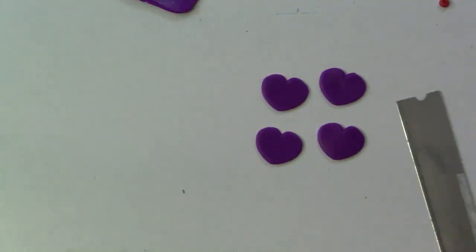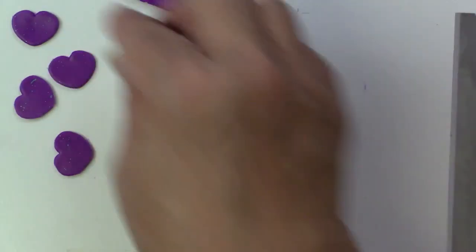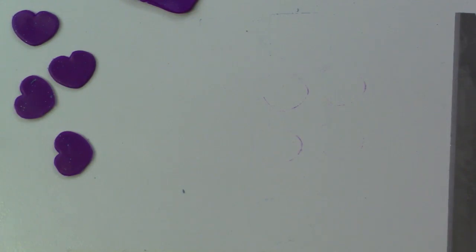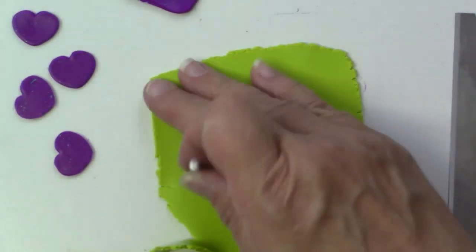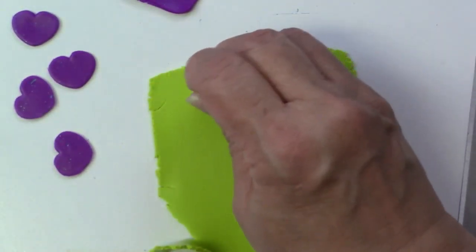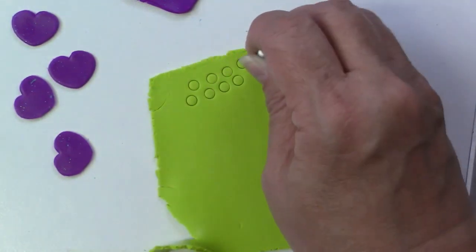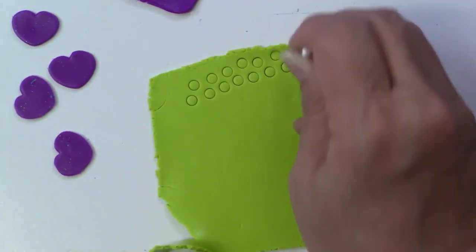So here's the purple clay and I'm just cutting out four hearts. My bright green and I'm using my little one-eighth cutter, a circle cutter, and I'm cutting out 16 because these are going to form the little balls on each of the corners.